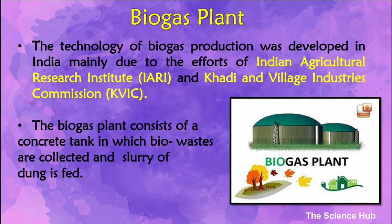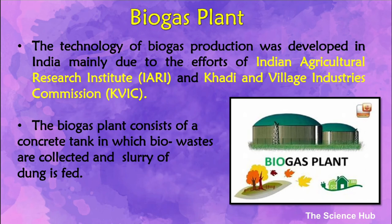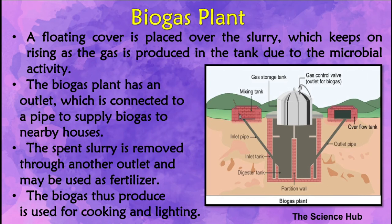Dung can be used for generation of biogas, commonly called gobar gas. Biogas plants help in production of biogas. The technology of biogas production was developed in India mainly due to efforts of the Indian Agricultural Research Institute (IARI) and the Khadi and Village Industries Commission (KVIC). The biogas plant consists of a concrete tank in which slurry of dung is filled and biogas is collected. A floating cover is placed over the slurry which rises as the gas is produced due to microbial activity. The plant has an outlet connected to a pipe supplying biogas to nearby houses, and the spent slurry is removed through another outlet and used as fertilizer. The biogas produced is used for cooking and lighting.